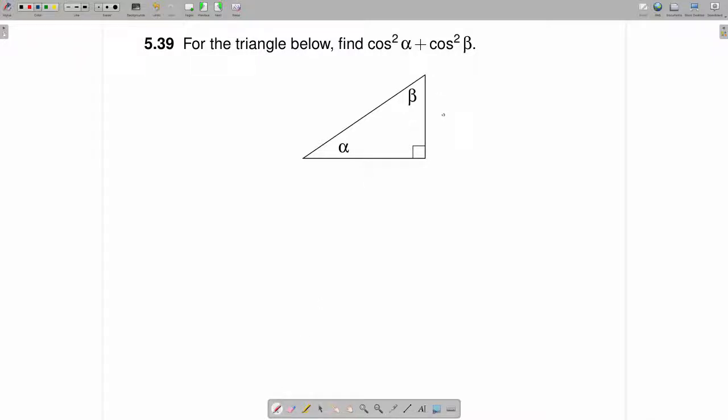I'm going to label the side that is opposite alpha as A, the side that is opposite beta as B, and the side that is opposite the right angle as C.